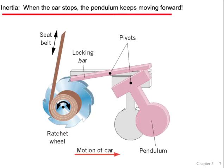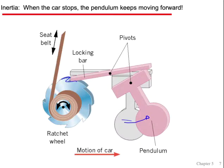Most of you know that your seatbelts in your car you can very easily pull out to click in, but in an accident it locks up. How does it work? When the car is moving normally, if the car suddenly stops or decelerates rapidly, this pendulum swings forward, which locks a little bar and prevents you from hitting the dashboard. In more modern cars, they've combined this apparatus into a separate wheel that also rotates and locks it in place, making it more compact.